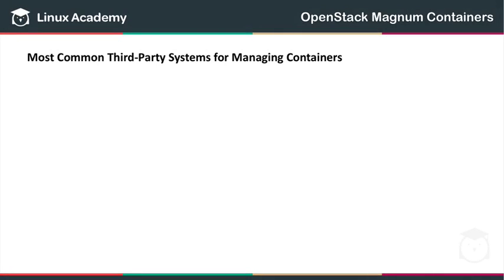The most common third-party systems for managing containers are Docker Swarm, Kubernetes, and Apache Mesos. Swarm enables native clustering for Docker. Kubernetes, developed originally by Google, is now an open-source orchestration system for Docker containers.